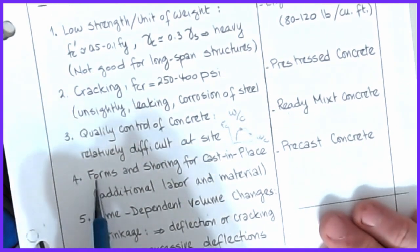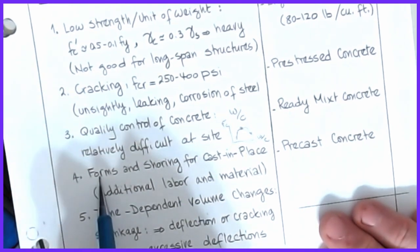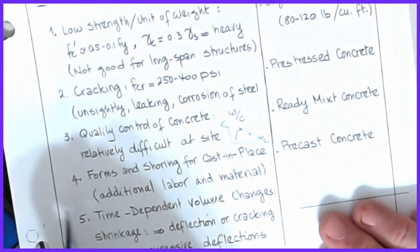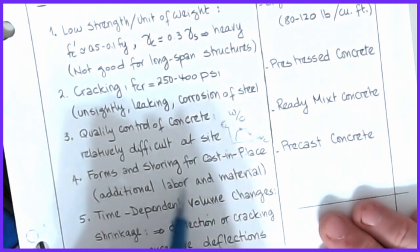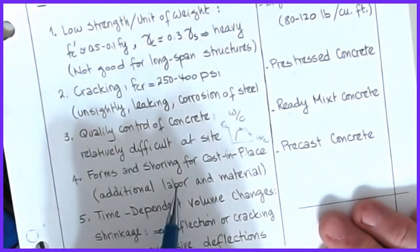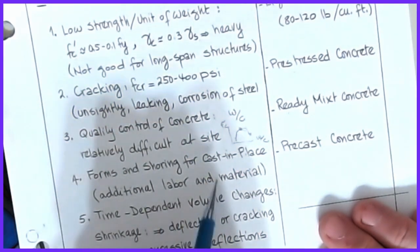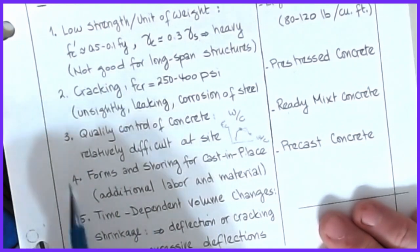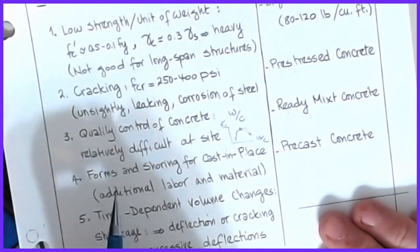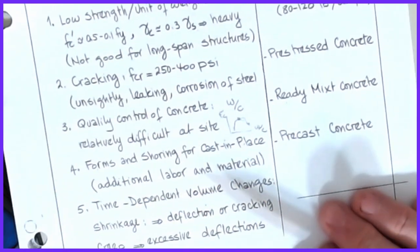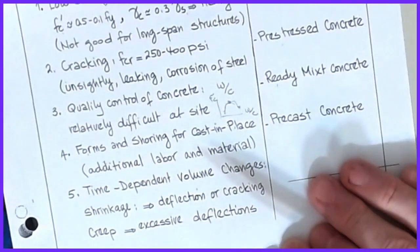We mentioned a disadvantage about the cost of forms for cast-in-place concrete — extra labor and extra material. A good rule of thumb is: whatever you pay for the concrete material, double it for the formwork and material, just as a quick rough estimate.